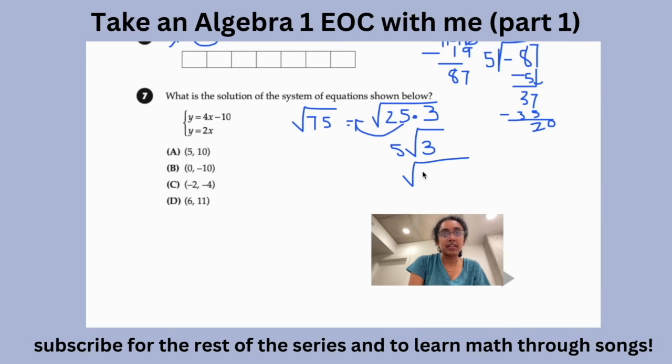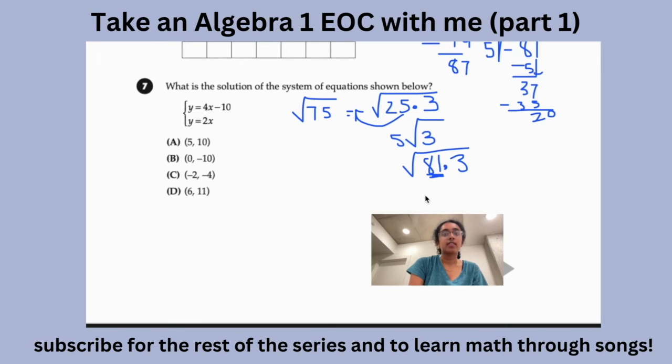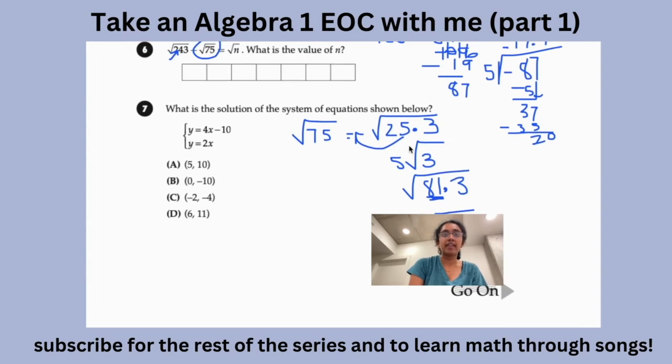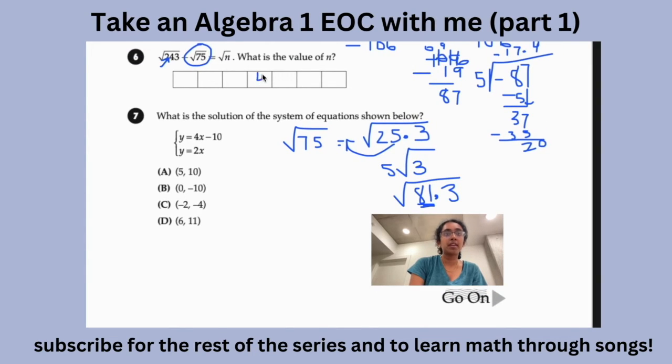So then that would just be √(81 times 3). And the square root of 81 is obviously 9. So then it would just be 9√3. So 9√3 minus 5√3 is just 4√3. I am not from Florida, so I don't know how you would write this out. But I'm just putting 4√3 on here.